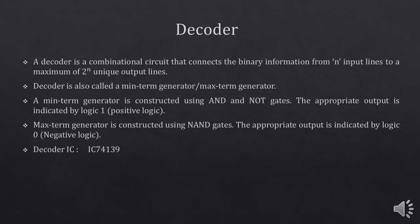What is a decoder? A decoder is a combinational circuit that connects the binary information from n input lines to a maximum of 2 raised to power n output lines. Which means if we have n number of inputs, we will have 2 raised to power n outputs. For example, if we have 2 inputs, then we will have 4 outputs as 2 raised to power 2 is equal to 4.